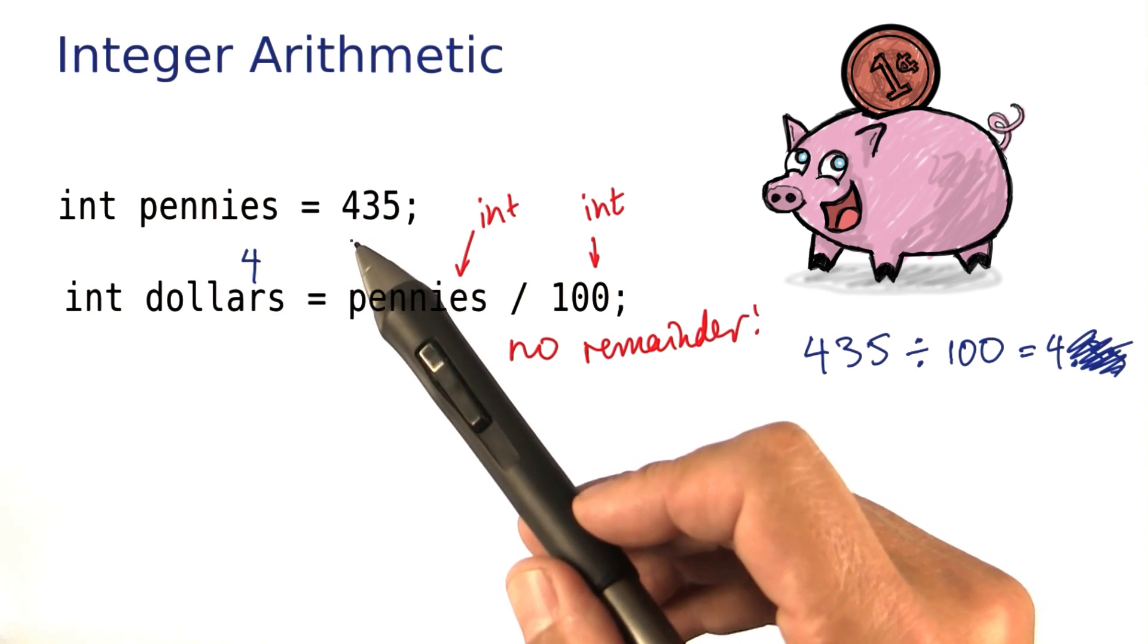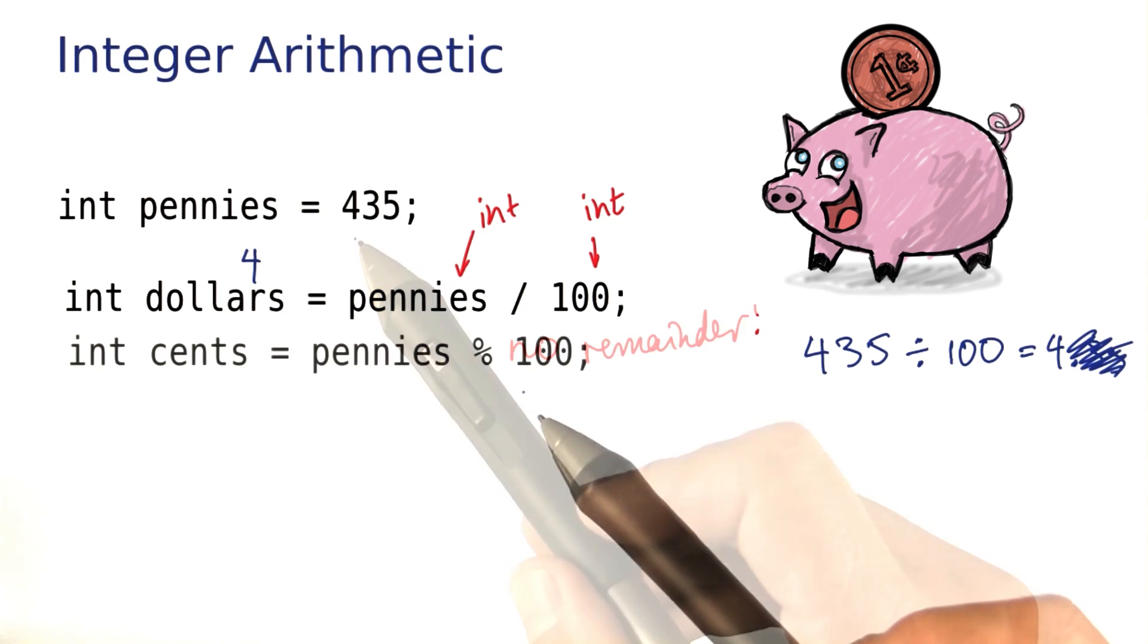That's just what we want, right? 435 pennies is $4. What if we also want the cents?